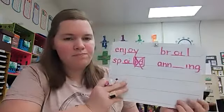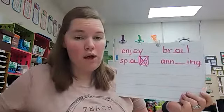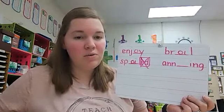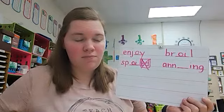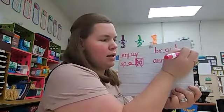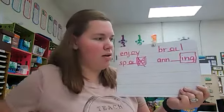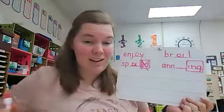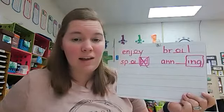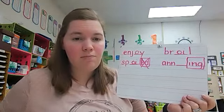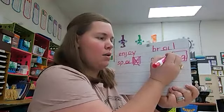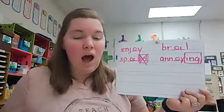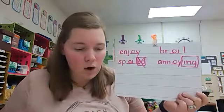We have one more word — we want it to say oi. Should I use O-I or O-Y? What do you notice at the end of this word? Suffix I-N-G. I'm going to put a box around it and pretend it's not even there. So for the root word, oi is at the end. How should we spell oi if it's at the end of the word? Right — O-Y. So the root word is annoy, and when we add suffix I-N-G, this word is annoying. Very good.